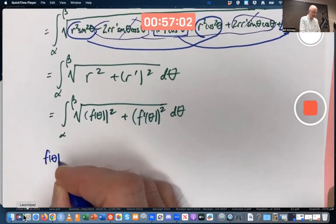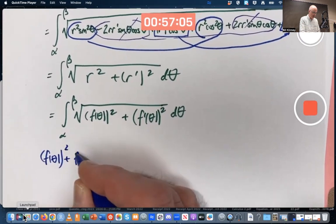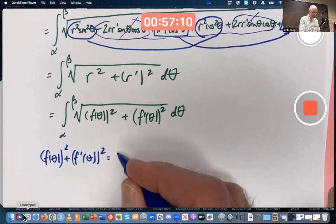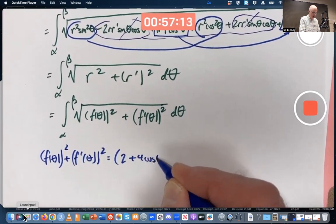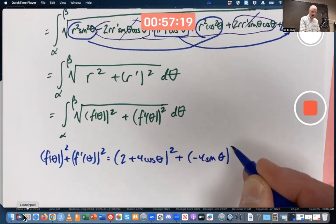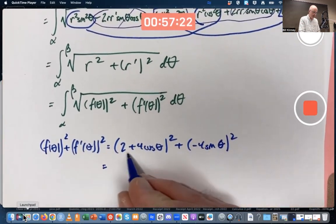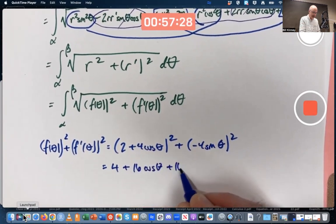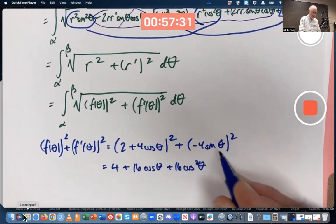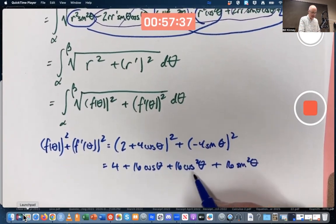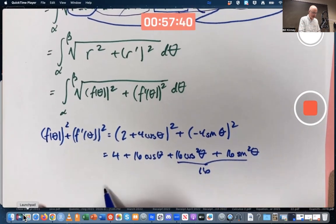What is f(θ)² plus f'(θ)²? For our example, f(θ) is 2 plus 4 cos θ. That gets squared. f' is negative 4 sin θ. That gets squared. Foil this one out. Gives me 4 plus 16 cos θ plus 16 cos² θ. I'll multiply that one times itself. I get plus 16 sin² θ. These combine to give a 16. 16 plus 4 is 20. So I get 20 plus 16 cos θ,